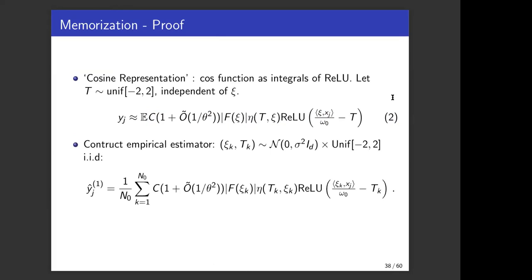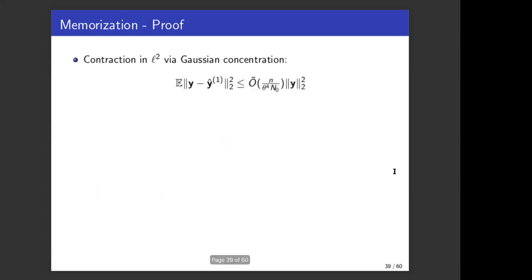Now that we have a formula in terms of relu in expectation for each y_j we can construct an empirical estimator for this. We draw psi_k and t_k from this distribution and then construct the following empirical estimator. Via Gaussian concentration inequality, we have the following contraction: this is the error in the labels, y_1 hat is the prediction of our neural network for y and y is the label. This can be seen as an n dimensional vector and there is the following norm contraction which we can show via Gaussian concentration.